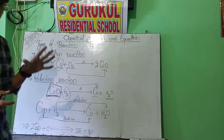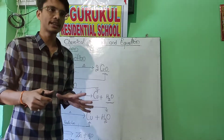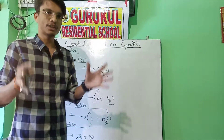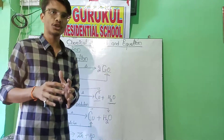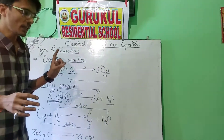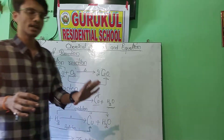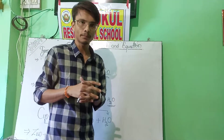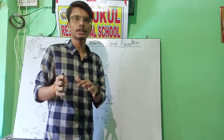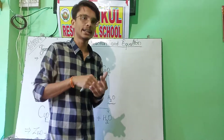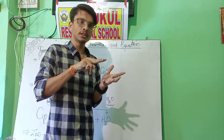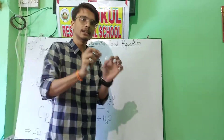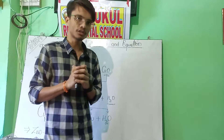The next one is the redox reaction. What is the redox reaction? It is when oxidation and reduction take place together. When these two reactions take place together, this is an example of a redox reaction. Not all oxidation reactions are redox reactions — only when both oxidation and reduction are happening together in a reaction can we call it a redox reaction.